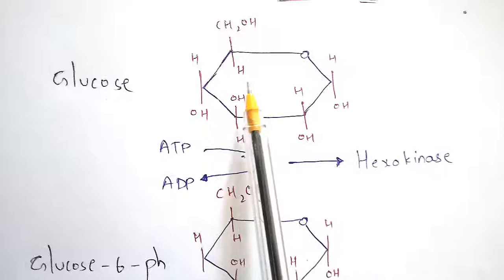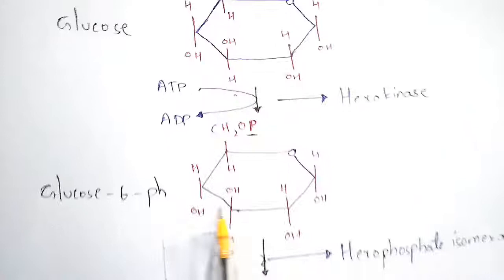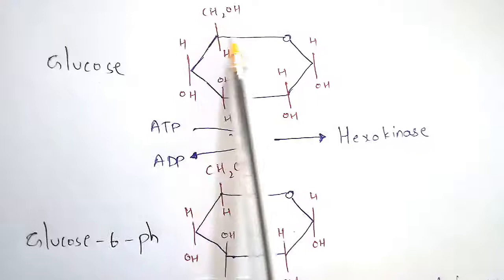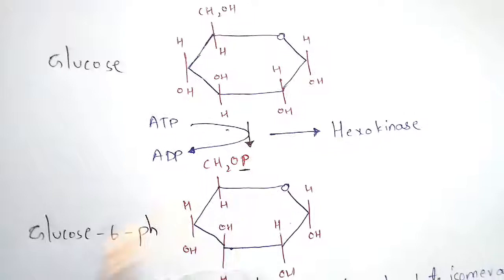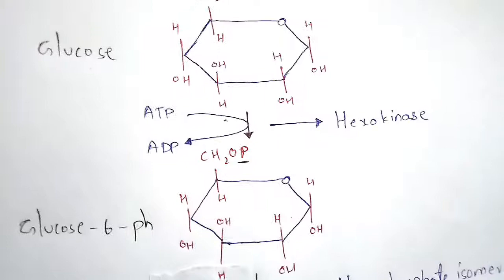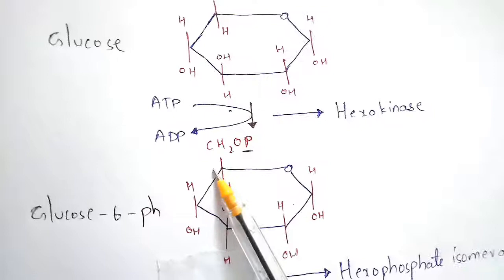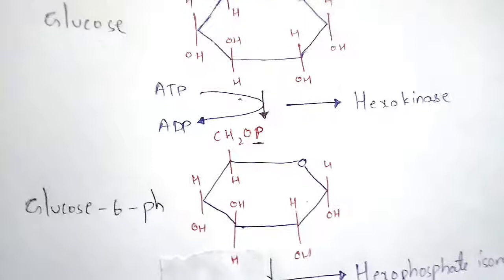Glucose will get converted to glucose-6-phosphate. During this conversion, ATP will be utilized and ADP will be produced. The main difference between glucose and glucose-6-phosphate is that at the sixth carbon, glucose has an OH group, but glucose-6-phosphate has a phosphate group (P) at the sixth carbon.